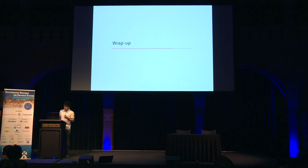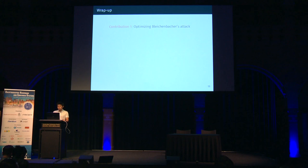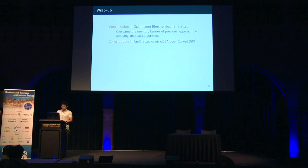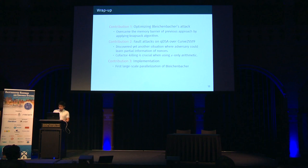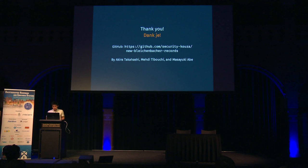In conclusion: in our first contribution, we optimized Bleichenbacher's attack and overcame the memory barrier of previous approaches by applying the Knapsack algorithm. In the second contribution, we proposed new fault attacks on QDSA instantiated over Curve25519, discovering yet another situation where an adversary can learn partial information about nonces. The important lesson is that cofactor killing is a crucial countermeasure when using X-only arithmetic of Montgomery curves. Finally, we implemented the nonce attack, presented the first large-scale parallelization of Bleichenbacher's attack, and set new records. Our parallel implementation is publicly available on GitHub.